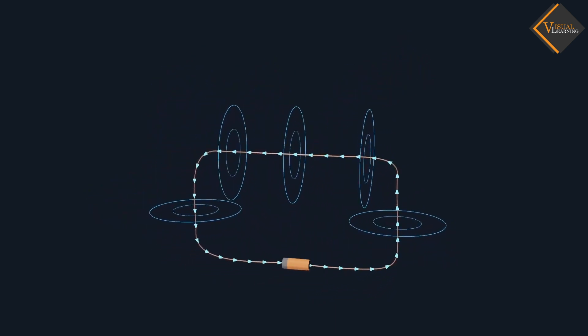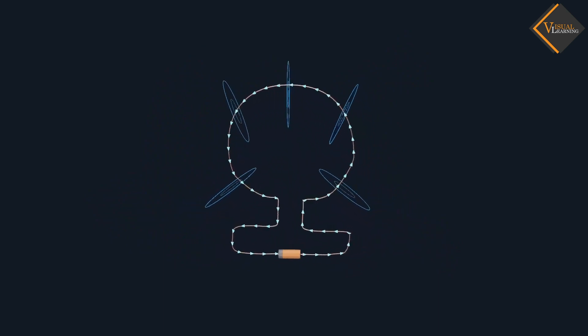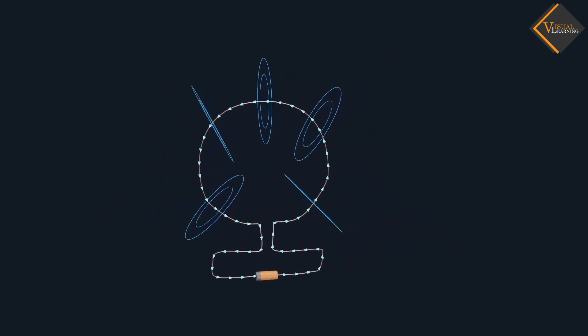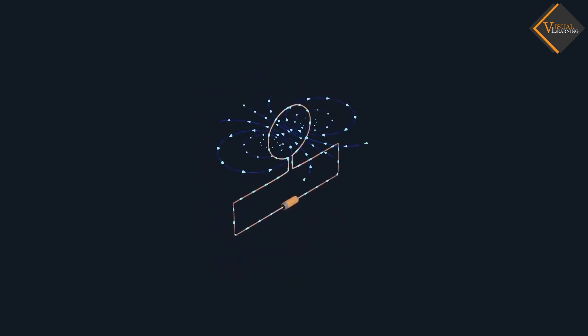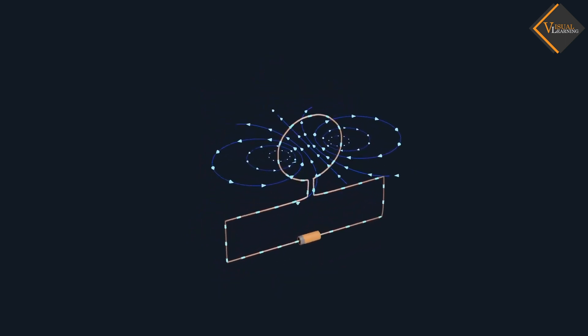Now suppose this straight wire is bent in the form of a circular loop and a current is passed through it. We can see how the magnetic field lines looks like.